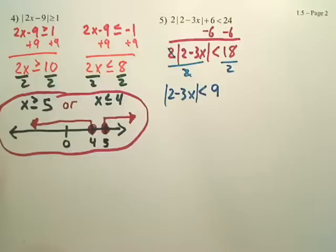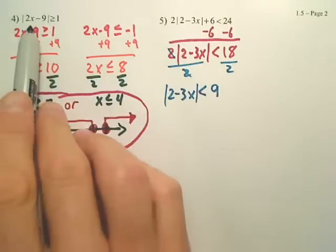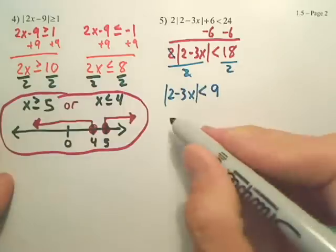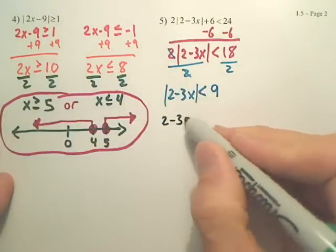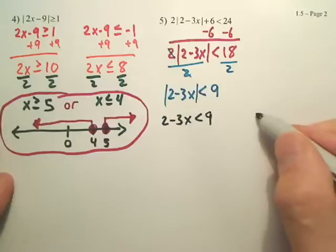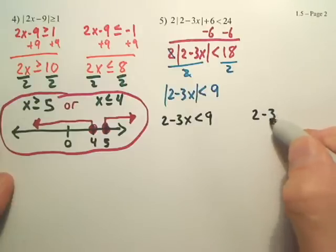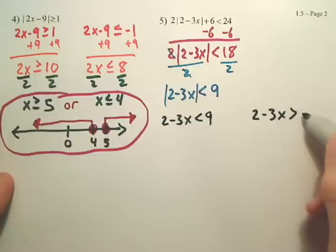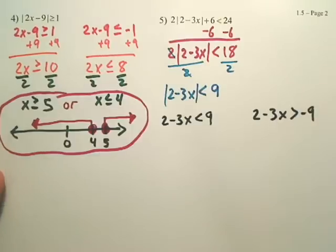Don't drop the absolute value yet. What's next? Does this look like this? 2 minus 3x is less than 9, is our original. Our other one is going to be 2 minus 3x is greater than negative 9. And we're going to solve each of these, just like we did here.